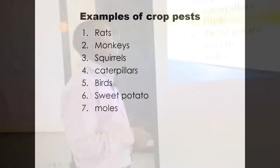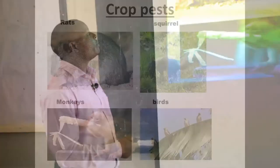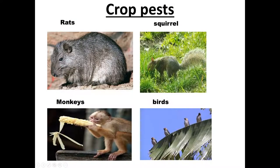Now let's look at the common crop pests. We have rats, and squirrels — the one that looks like a rabbit or a rat but has a bigger, hairy tail. Then bean weevils — you can see them destroying beans. Monkeys are pests because they like maize and root crops like cassava; they can uproot them and sit down and eat. Then birds are very good pests, mostly for cereals like millet, rice, and maize — they eat up the grains.